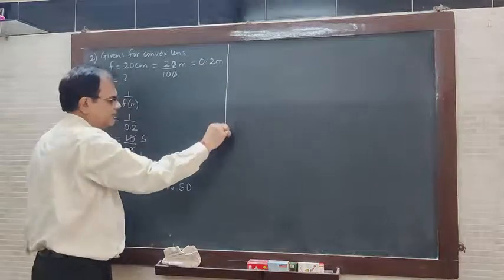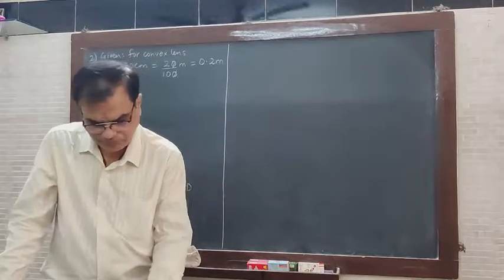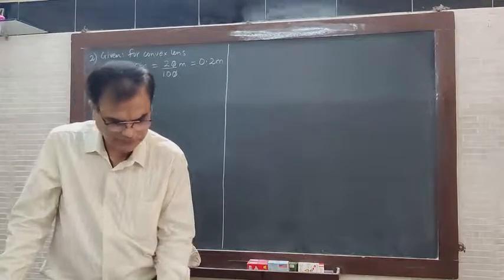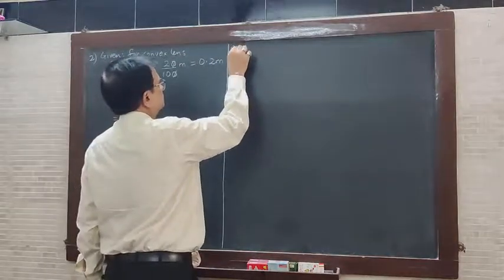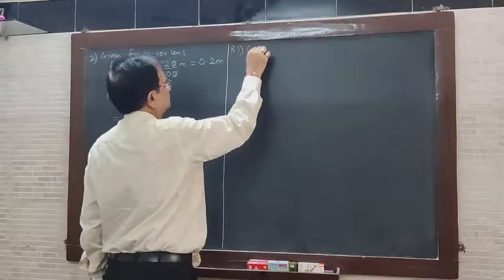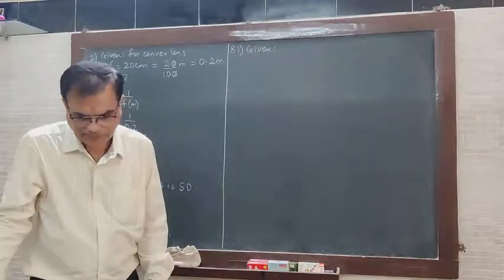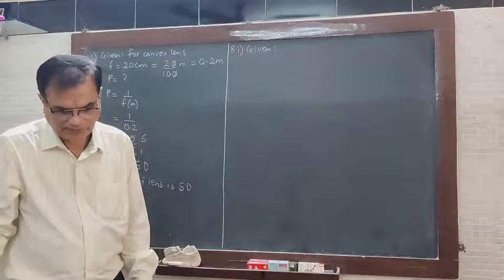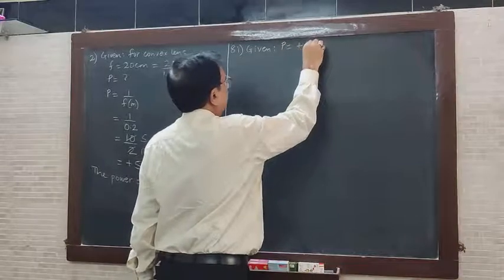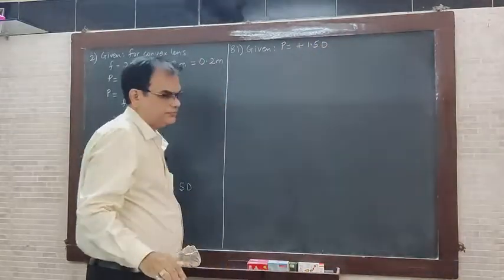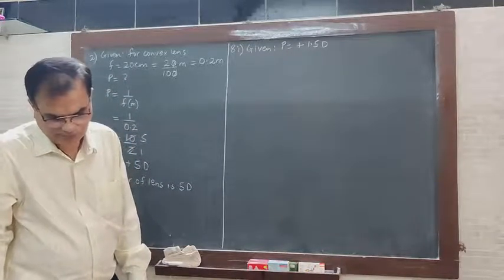Now we go to the unsolved examples — page number 92, question number 8. Given: a doctor prescribes a lens having power plus 1.5 diopters. What will be the focal length of the lens, what is the type of the lens, and what must be the defect of vision?